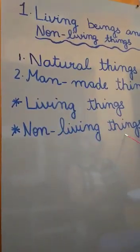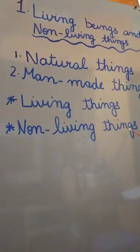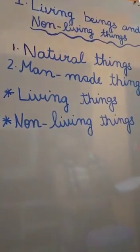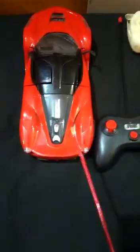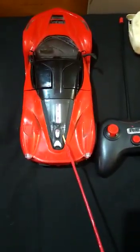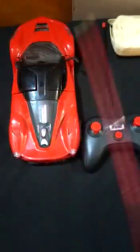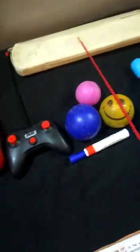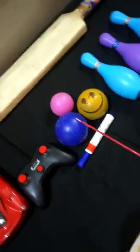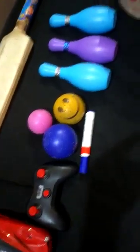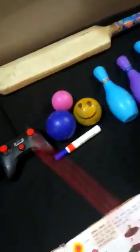Because they have life in them. Now we will talk about non-living beings. Here are few examples of non-living beings. The examples of non-living beings are car, bat, ball, toys, container. These all are non-living beings.